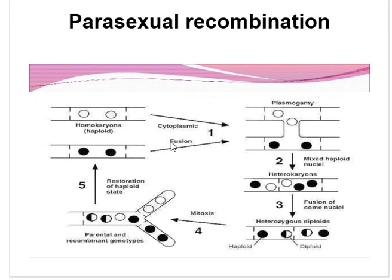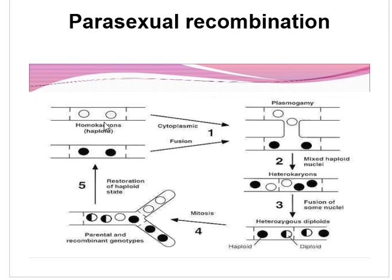In summary: cytoplasmic fusion (plasmogamy) takes place, mixed haploid nuclei form the heterokaryon. Further fusion of these nuclei produces heterozygous diploids. Then occasional mitotic crossing over takes place, forming parental recombination genotypes. In the fifth step, restoration of the haploid state occurs again, and this step is repeated again and again.